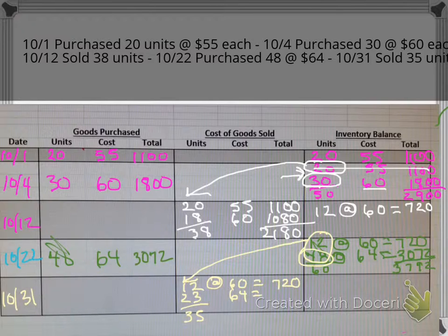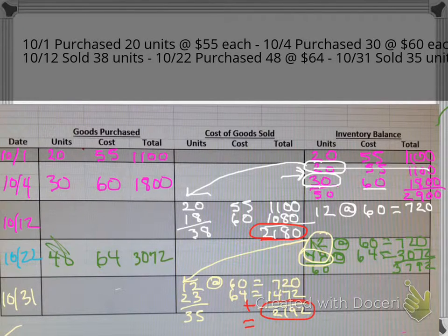In order to get to a total of 35, we need 23, and 23 units will then have to come out of that group of 48 that we have here, and those cost $64 each. So 23 times 64 is $1,472. Then we'll add that together: $720 plus $1,472 is $2,192. When you go to calculate cost of goods sold, it's going to be these two numbers added together. So if we add those two together, $2,180 and $2,192, you should get $4,372. My total cost of goods sold here is $4,372, and we sold 73 units.